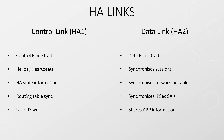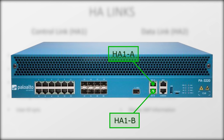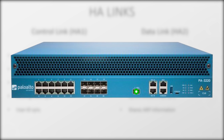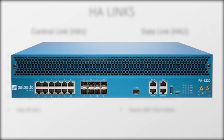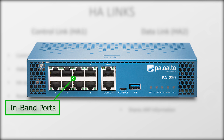Not all models have the exact same ports. The model shown here has HA1A and HA1B, which are the primary and backup control links. Instead of a port named HA2, it has an HSCI port — a high-speed data link. Some of the bigger firewalls have an additional AUX port. On the other end of the scale, smaller firewalls do not have any ports dedicated to HA, but we still have options. In that case, we would configure some of the regular in-band ports for HA. We can even use the management port for the control link.